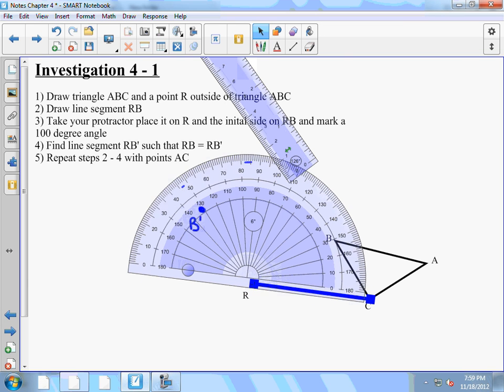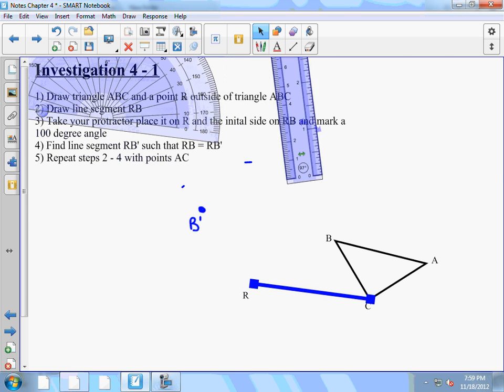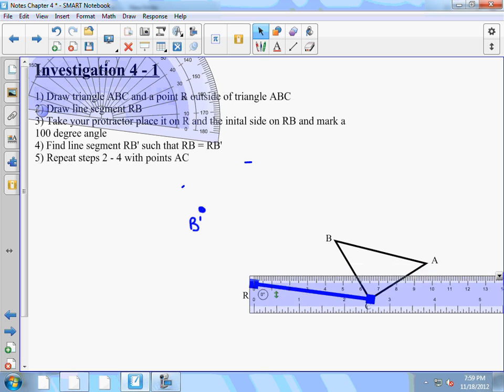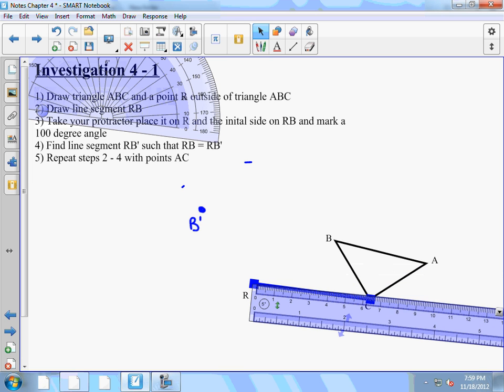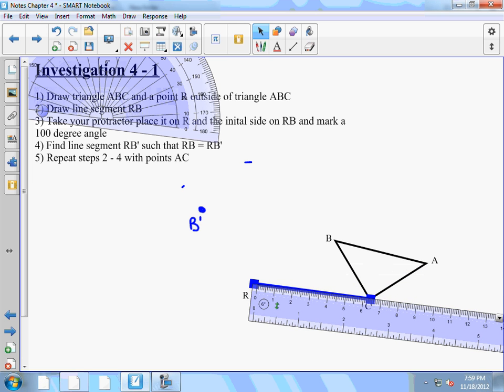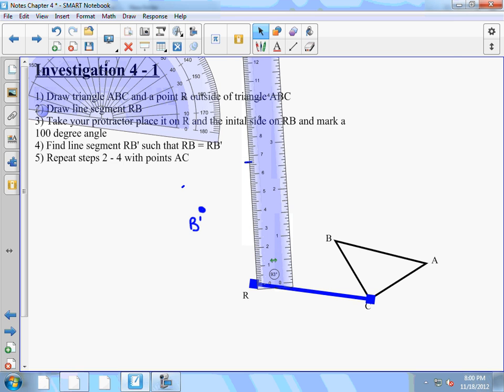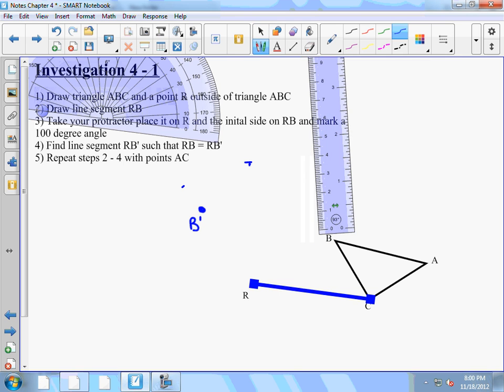Right, and then now I have to measure what's the length of RC. Looks to be about 6.5 centimeters. So match my ruler up to that mark, find out where about 6.5 centimeters is, and mark off C prime.